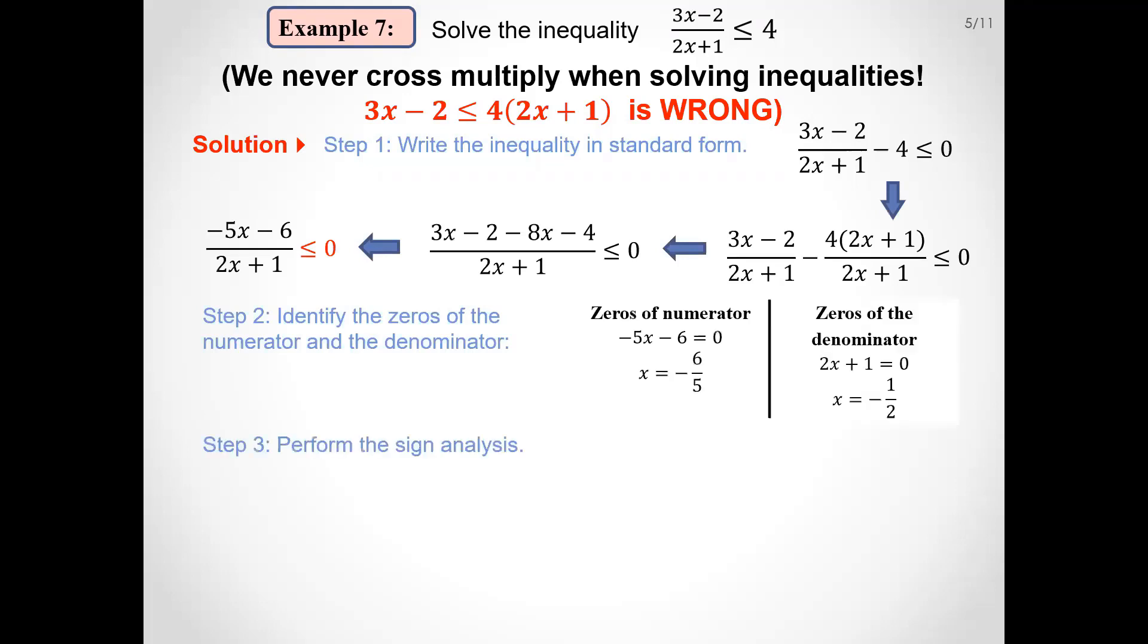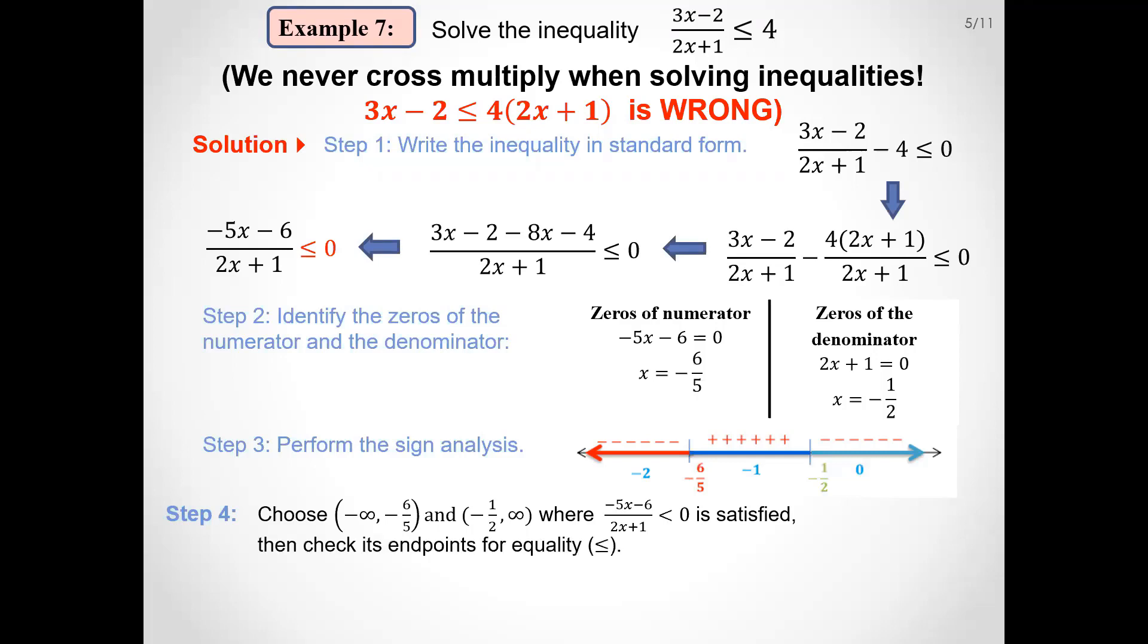And then again, I repeat, be careful, do not cross-multiply. Write it in standard form. This is the standard form. Identify the zeros, perform the sign analysis, choose the pieces where the quantity is negative. Exclude minus half, include minus 6 over 5.